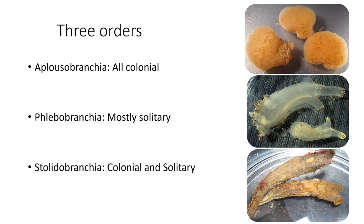In the class Ascidiacea, there are three orders. I've shown you some photographs of representative individuals of each of these orders. First, we have order Aplusobranchia, and all of the species in this order are colonial, meaning you have zoids that are genetically identical living in the same colony. The second order is Phlebobranchia, and most of these individuals are solitary. And lastly, order Stolidobranchia, where species can be either colonial or solitary.